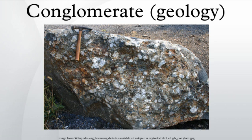If the gravel clasts that comprise it are largely well-rounded to sub-rounded, it is a conglomerate. If the gravel clasts that comprise it are largely angular, it is a breccia. Such breccias should be called sedimentary breccias to differentiate them from other types, e.g., volcanic and fault, of breccias. Sedimentary rocks that contain a mixture of rounded and angular gravel clasts are sometimes called breccia-conglomerate.